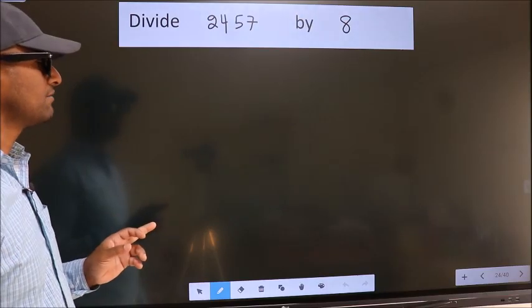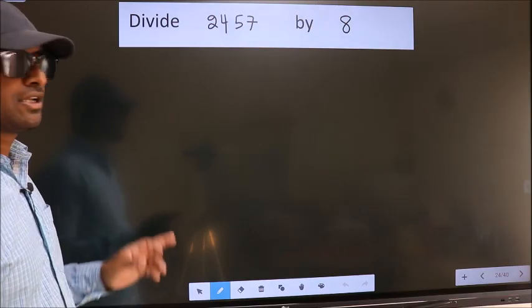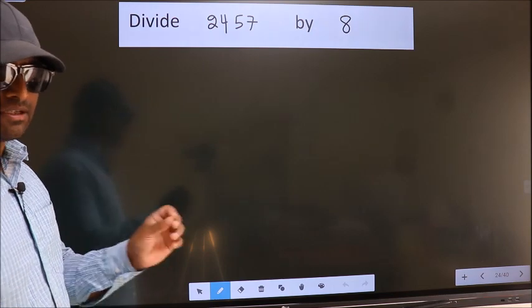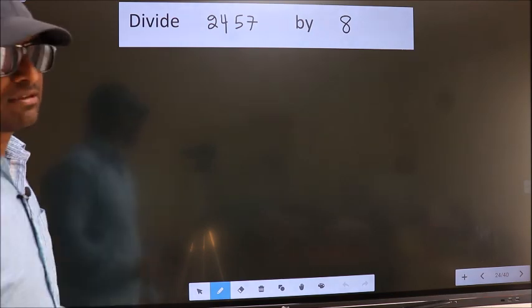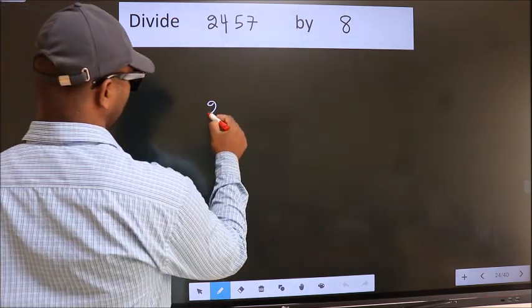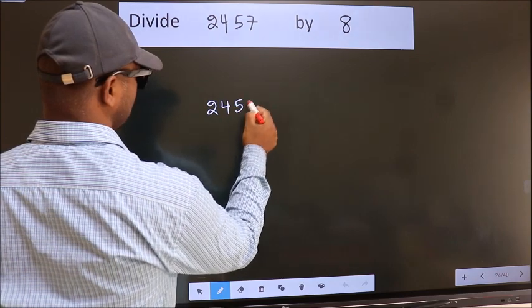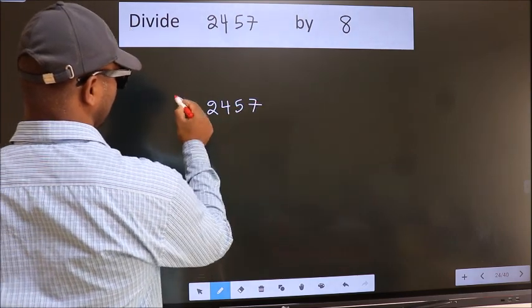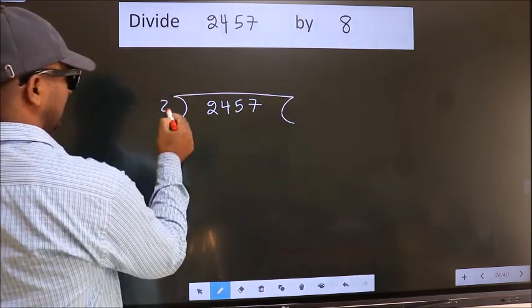Divide 2457 by 8. To do this division, we should frame it in this way. 2457 here, 8 here.